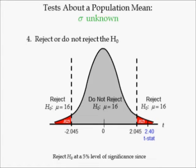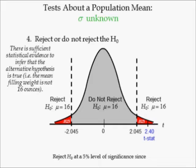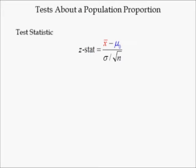Hence, we reject the null hypothesis at the 5% level of significance since the t-stat is not between the two critical values. This means there is sufficient statistical evidence to infer that the alternative hypothesis is true — that is, the mean filling weight is not 16 ounces. Thus, the production line needs to be shut down and adjusted. The procedure for doing tests about population proportion p is similar to those about population mean mu.